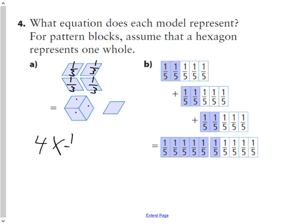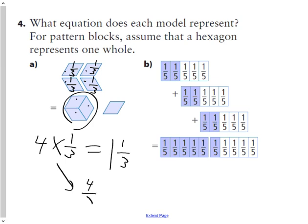So if I have four groups of one-third — one, two, three, four — I can make one plus an additional third. More accurately, if I quadruple one-third, I'd have four-thirds, which is equal to one and one-third.